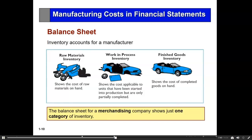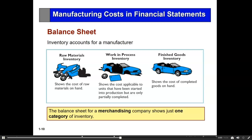A merchandiser has only one type of inventory: merchandise inventory. But for a manufacturer, we have three — raw material, finished goods, and the material being produced on the shop floor that's no longer raw material but isn't finished yet. That's called work in process.